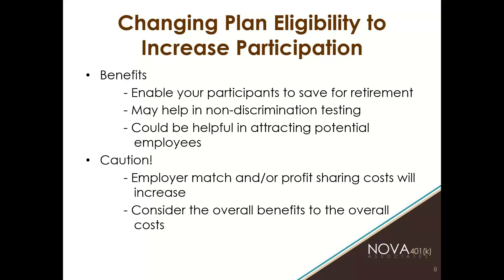One of the biggest things when looking at plan provisions is eligibility — what an employee must do before they can join the plan and start contributing. Some plans want everyone to participate; others by design limit participation. If you want to increase participation, it helps more of your employees save for retirement. Higher participation rates also help your non-discrimination testing and top-heavy testing. A robust plan can also be a recruiting tactic to bring good new employees in the door.